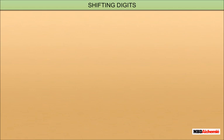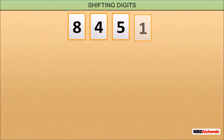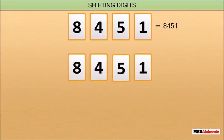Shifting digits. There are four cards with digits 8, 4, 5, and 1 written on them. We arrange them to form four-digit numbers. Here we have 8451. We can rearrange the cards to get other numbers. Suppose we interchange the cards numbered 4 and 5. We get the number 8541.